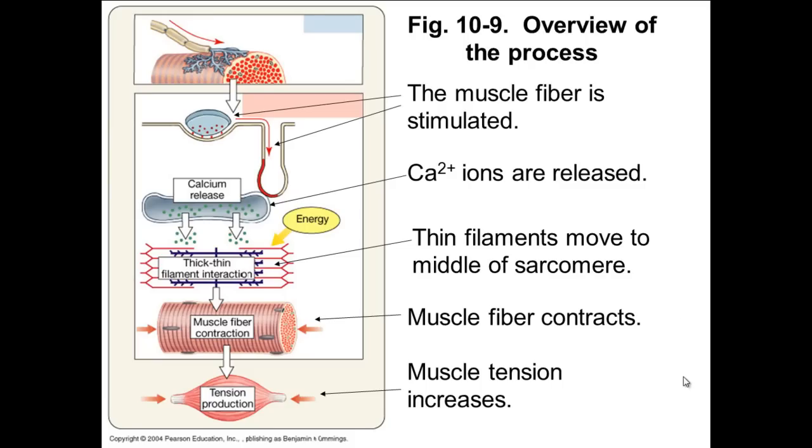So what that has now done is that has caused the muscle fiber to contract and the actin filament has pulled right towards the center line of the sarcomere. What you end up with is a muscle fiber contraction and therefore the tension within the muscle has increased, and that is essentially how you produce a muscular contraction.